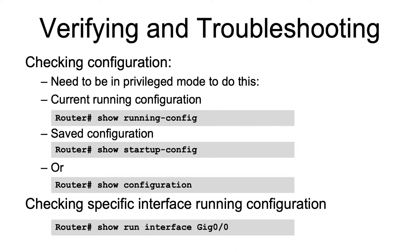You can use 'show run interface' — in this example, GigabitEthernet 0/0 — to check the configuration running on a specific interface.